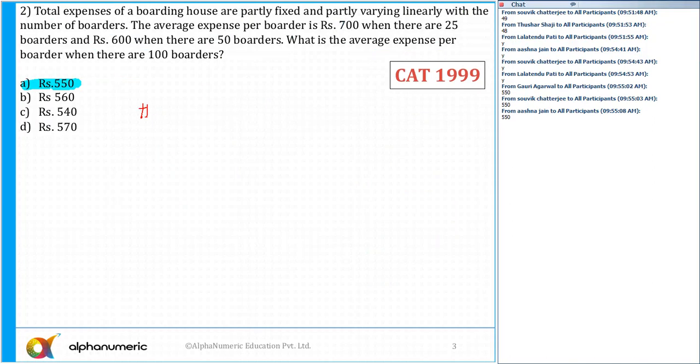So I can say number of boarders, then the average expense, and then I can say the total expense.